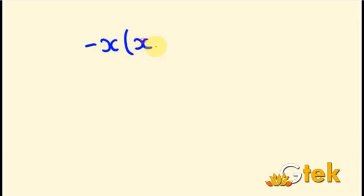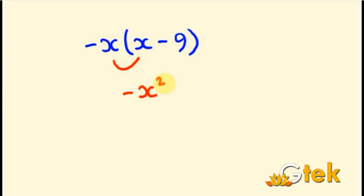Now we will see another example for simplification. I am considering an example of minus x open bracket x minus 9. I have to multiply minus x into x. Minus x and x multiplied gives minus x squared. Then minus into minus — so minus x squared, and in between you are having minus, so it becomes plus 9x. The answer is minus x squared plus 9x.